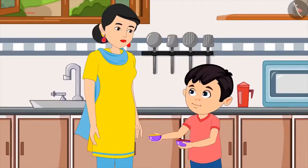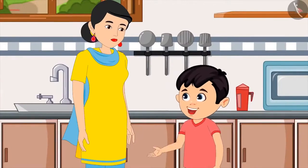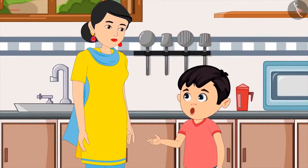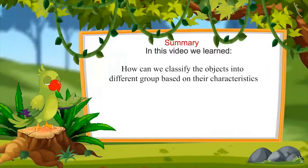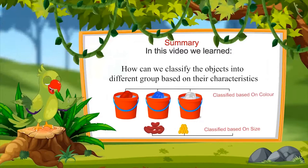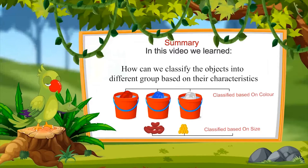Here you go, mom. Dal and rajma are separated. Very good, Chotu. Thank you. Now let me quickly make dal and rice for you. Did you enjoy seeing the examples of classification? That's all for today. In this video, we have learned how we can classify objects based on their characteristics like color and shape, and thus how to create different groups of them. I hope you have enjoyed and understood this topic properly. Bye, friends.